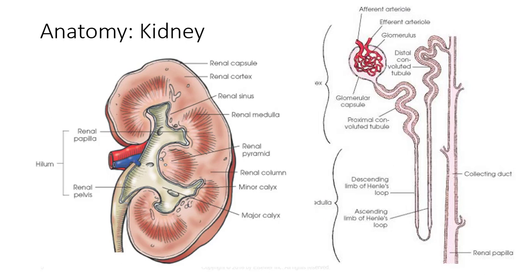Looking at the different portions of the kidney, the renal capsule composes the outer covering, while the renal cortex is the outer layer of renal tissue. The renal medulla takes up the inner layer of renal tissue and is composed of 8-15 cone-shaped segments of collecting tubules called the renal pyramids. Renal columns are extensions of cortex between the renal pyramids.